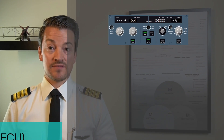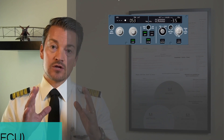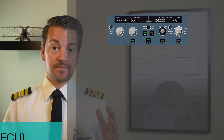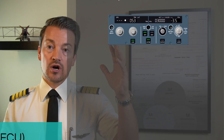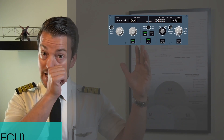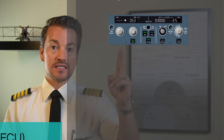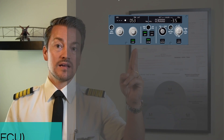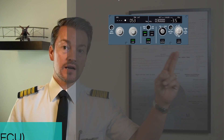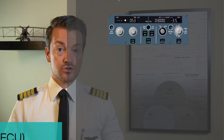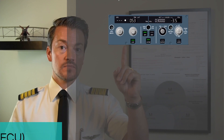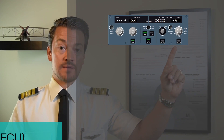Here I have the FCU enlarged to talk specifically about how to operate it and how it is designed. Looking from left to right, we have three sections in the FCU. The first section is the speed section, then we have the lateral section, and finally the vertical section. These three sections allow four specific controls: the speed knob, the heading knob, the altitude knob, and the vertical speed/flight path angle knob.